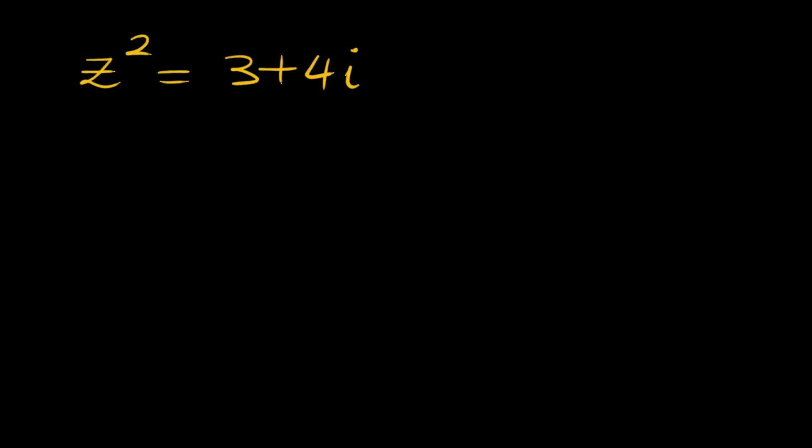Hello everyone, welcome to the channel. We have an equation with a complex number: z squared is equal to 3 plus 4i. We want to find the two roots satisfying this equation — that is, the two square roots of the complex number 3 plus 4i.